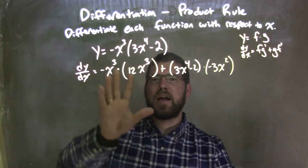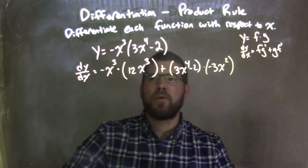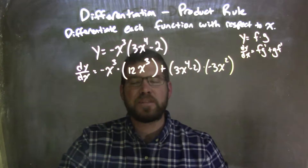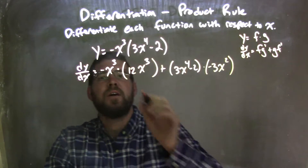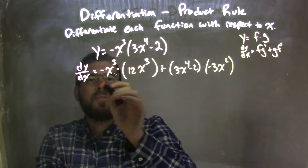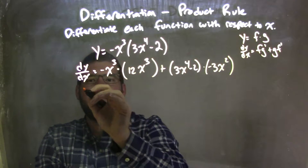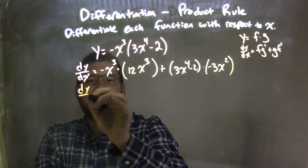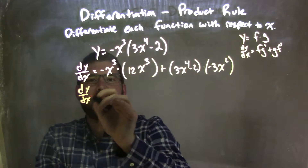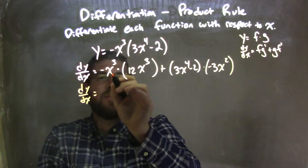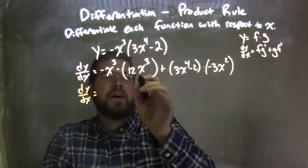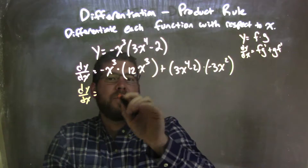Okay, so now that we've applied the product rule, we need to simplify this. So let's distribute or multiply that out. dy/dx: negative x to the third times 12x to the third.